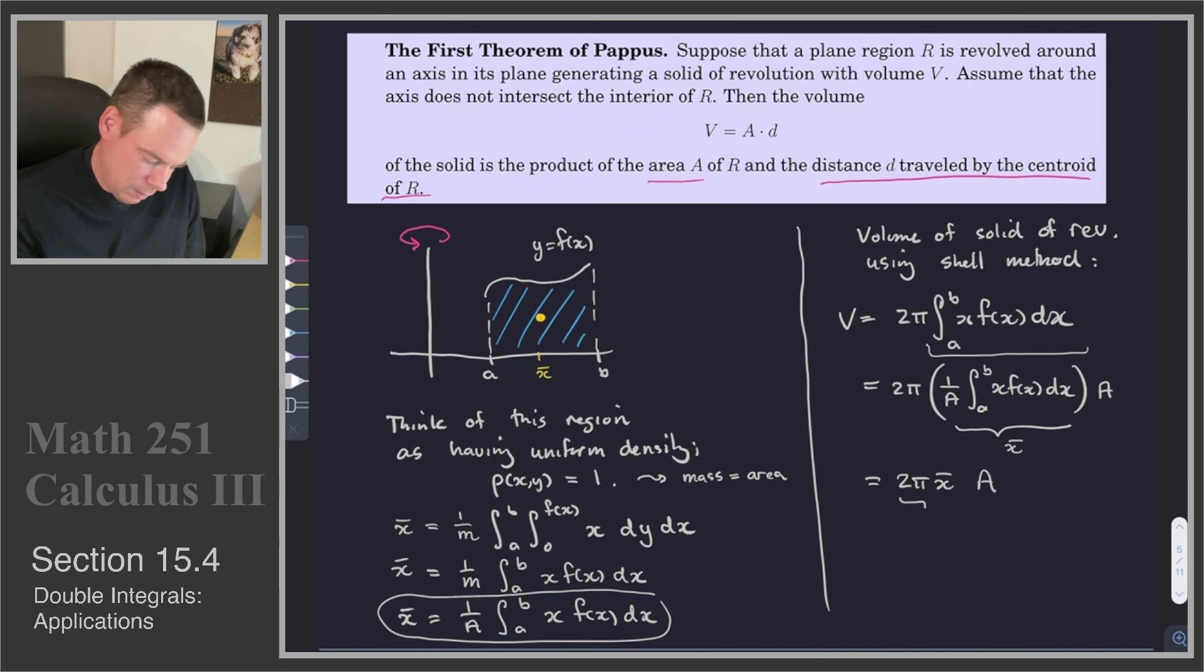So this is 2πx̄ times A. And this is what we've called D in the problem—that's the distance the center of mass has traveled. So this becomes D times A. And so that proves our result, that the volume of a solid of revolution is the area of the region you're revolving times the distance the center of mass travels. So that's quite a beautiful result known as the First Theorem of Pappus.